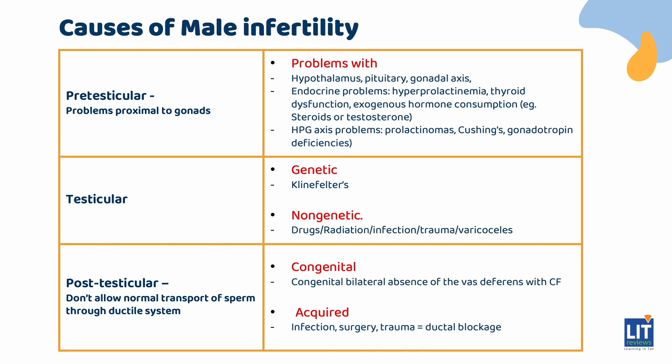Post-testicular causes are things that don't allow normal transport of sperm through the ductal system. These can be congenital or acquired. Men exposed to DES in utero can have hypospadias, cryptorchidism, or other blockages. Congenital absence of the vas deferens is sometimes seen in cystic fibrosis patients. Non-genetic acquired causes include infection, surgery, and trauma.